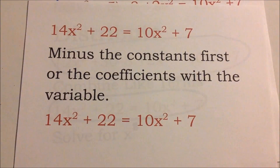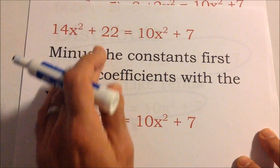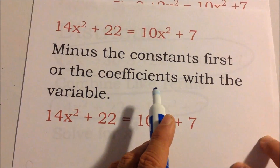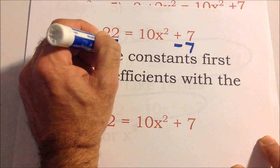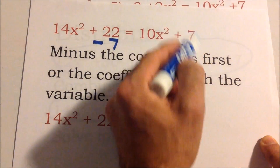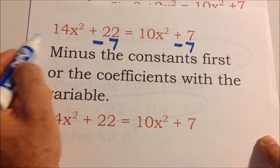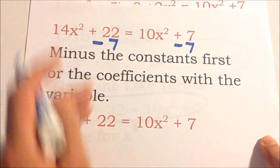Most of the time students subtract the smaller number, so I'll subtract 7. Whatever you do to one side, you do to the other. I didn't have to start with 7 — I could have subtracted the 10x squared, the 14x squared, or the 22 instead.